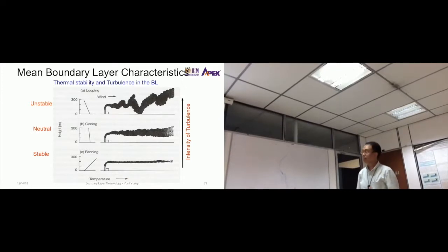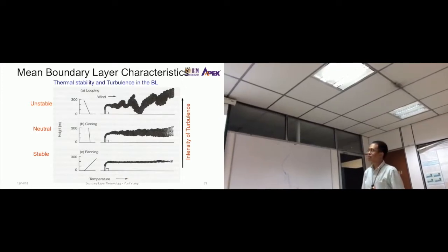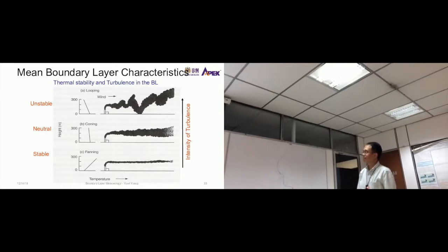You see this in the form of video instead of just this diagram. So unstable, you see that looping structure. For neutral, coning. For stable, fanning. The intensity of turbulence is low for stable, but for unstable, the intensity of turbulence is high.